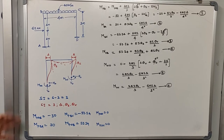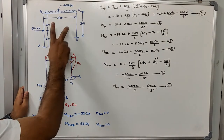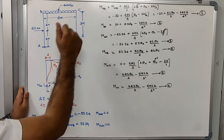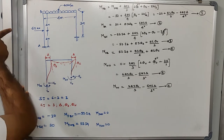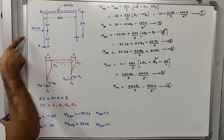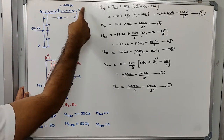In the previous video I had given you this problem to solve by yourself, but none of you responded. Anyway, we are going to solve it now. This is a frame which is unequal in its legs — the columns are not of equal length — and there is also a horizontal force acting on column AB. Because of this, the structure will sway.